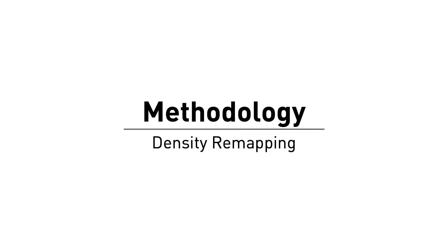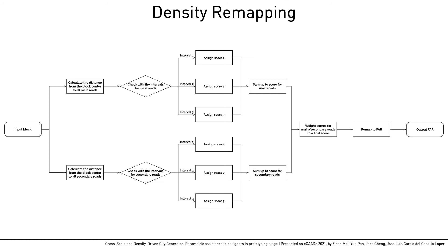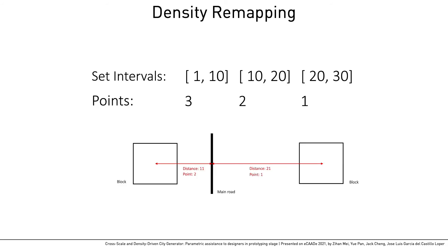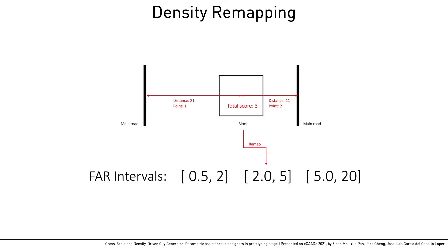The second step takes in the blocks and roads and returns FAR for each block. We first calculate the minimum distances from blocks to roads in all classes. Then the distances are classified by three intervals into scores. All the scores of a block are weighted and summed up into the final density value. The range of each interval is set by the user. For instance, the three intervals on the screen represent three scores — shorter distance for higher scores. Each block will receive a set of scores to sum up.